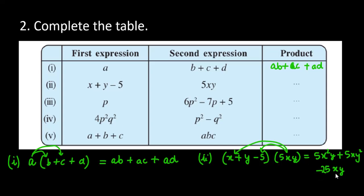और 5 into 5 is 25, X एक बार है, Y एक बार है. So, this is your answer. Answer is 5X square Y plus 5XY square minus 25XY.